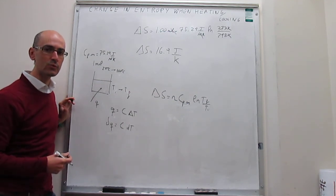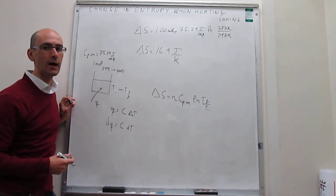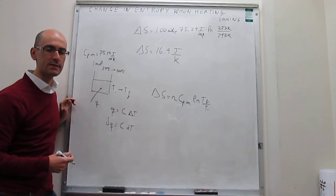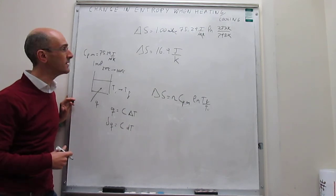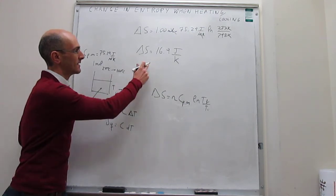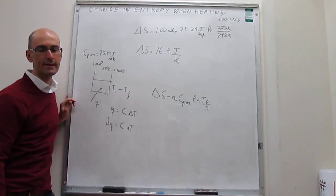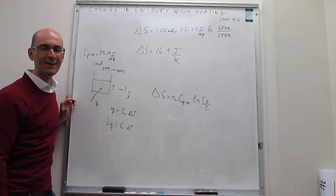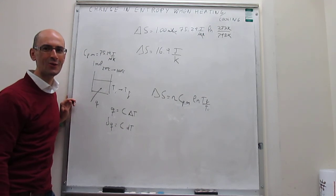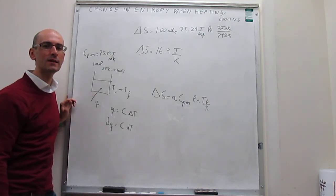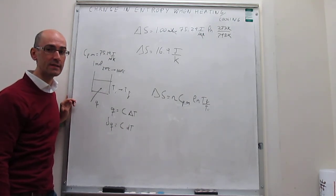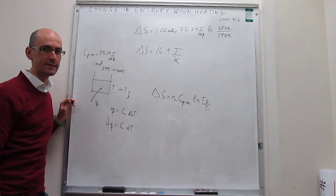Likewise, if this had been a cooling process, then the entropy would have decreased and delta S would have been negative. So in this video we have seen how to calculate the change in entropy when heating or cooling a system.